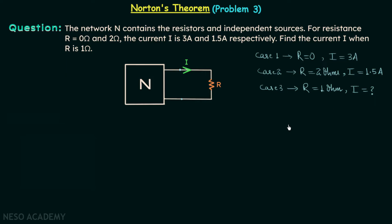Now we will understand how to find current I when R is equal to 1 ohm. We can have the equivalent Norton's circuit for the network N because we can see that this resistance is not constant, it is changing its value. In this scenario, the best thing is to have the Norton's equivalent circuit for this network. I am going to have the Norton's equivalent circuit.